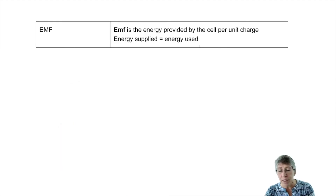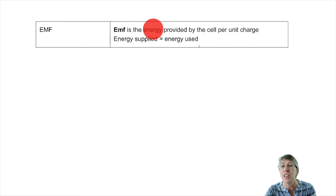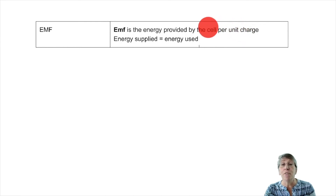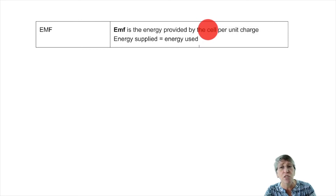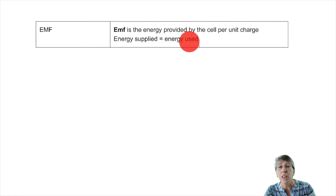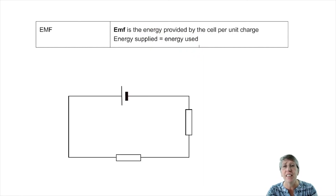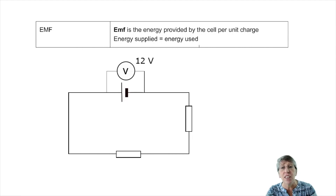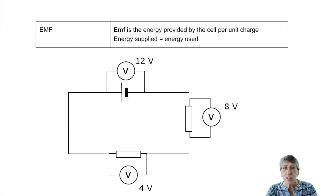Now we're going to talk about EMF. EMF is just a specific potential difference — it is the potential difference supplied by the cell. All the energy supplied by the cell will be used in the circuit. So if the cell is supplying 12 volts and one resistor is using 8 volts, then the other resistor will be using 4 volts. That was the basics, and in the next video we are going to apply that to voltmeters and ammeters.